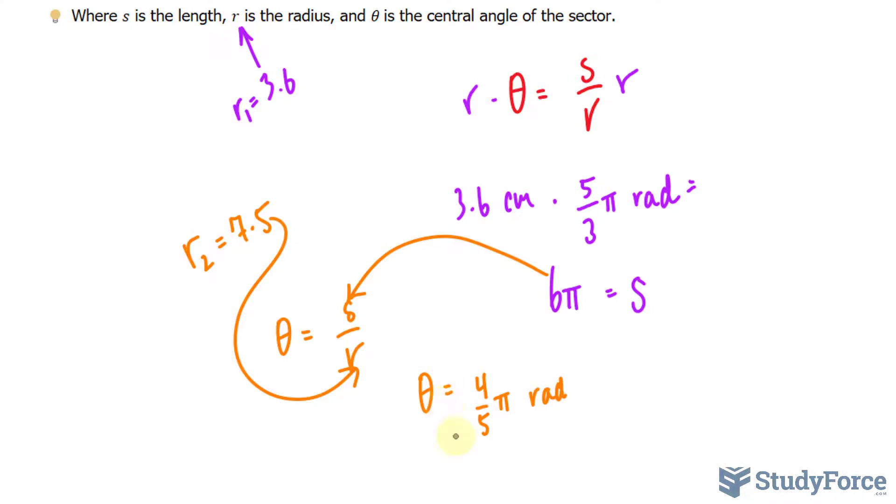And in case you're confused, remember the units for this were centimeters times radians. Even though I never really wrote them, they were there. And the units for the radius of the larger gear was centimeters. As you can see, the centimeters unit cancels out, leaving us only with radians.